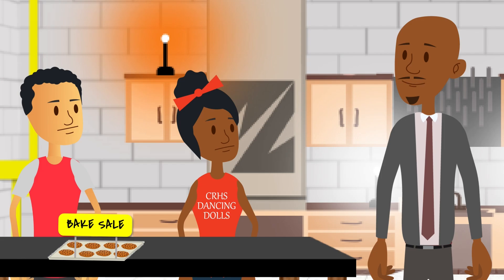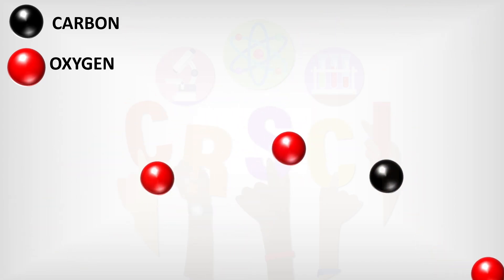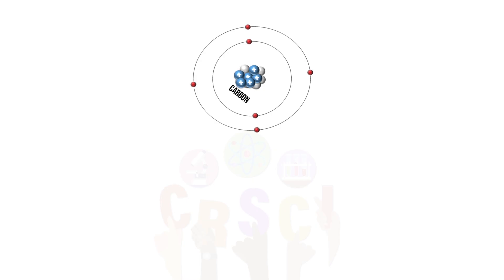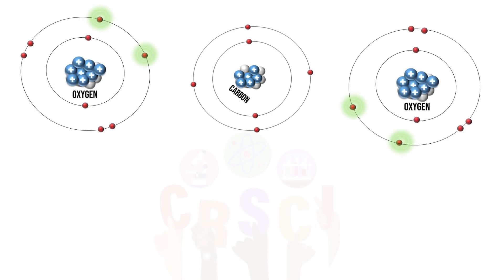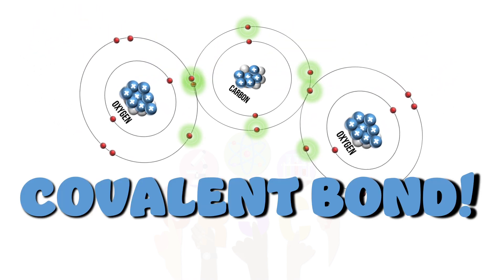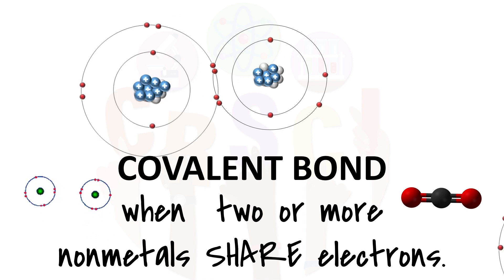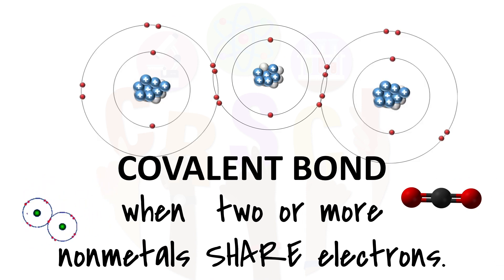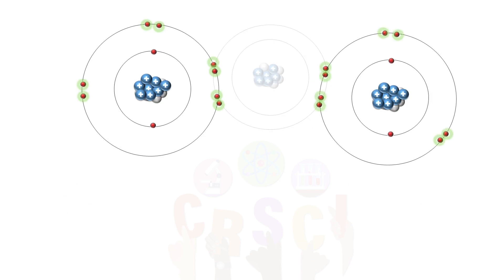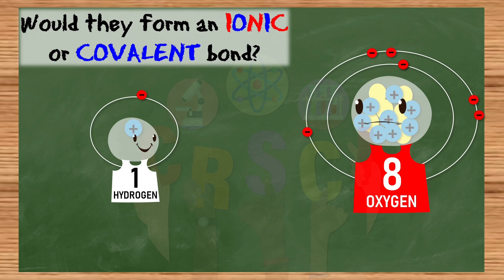Why is there so much stealing? Can't we all just share? That's exactly what happens — particularly with two non-metals. There are many oxygen and carbon atoms available. Two oxygens would just move up and share their two lone electrons with carbon's four lone electrons. This is called a covalent bond — it tends to occur with two or more non-metals. Now carbon has eight and the two oxygens have eight.